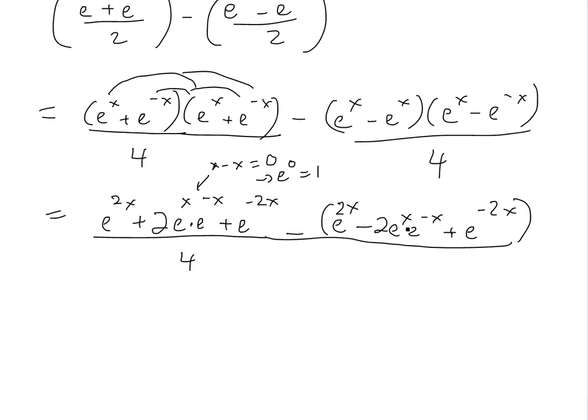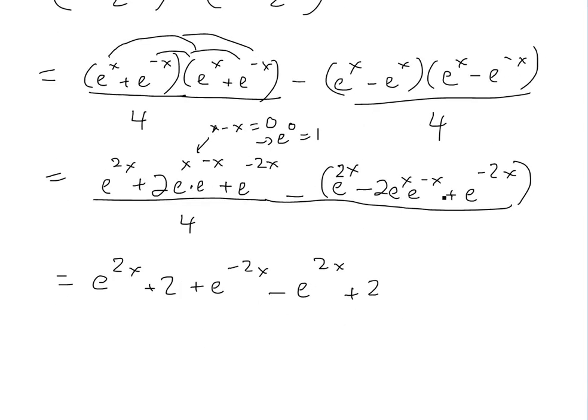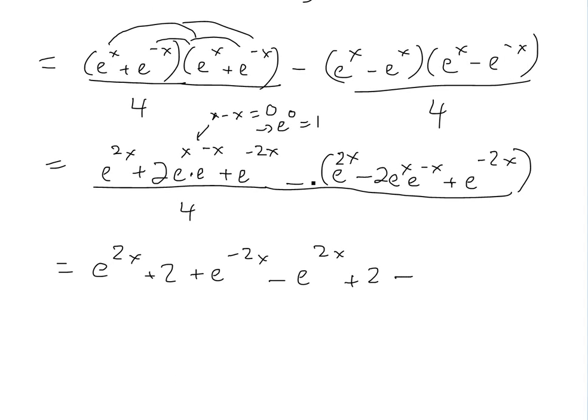This e to the x times e to the negative x equals 1. So we'll have now e to the 2x plus 2, that's going to be multiplied by 1, plus e to the negative 2x minus e to the 2x. This is going to be positive 2e. The e's cancel, so we'll have positive 2 and then minus e to the negative 2x, all divided by 4.